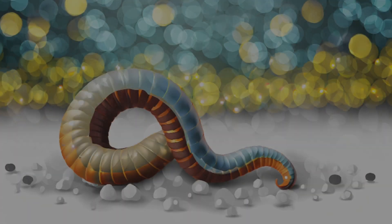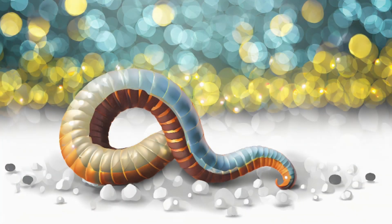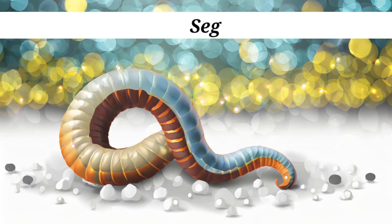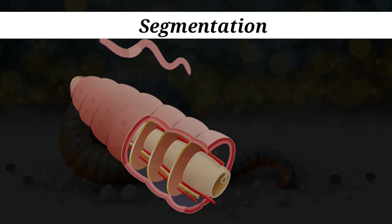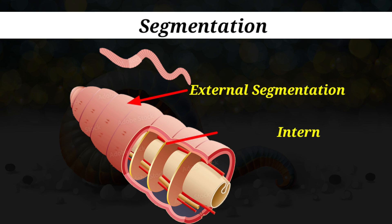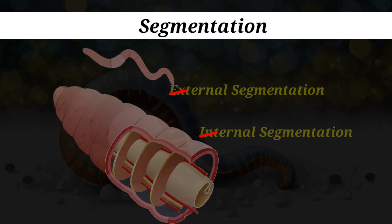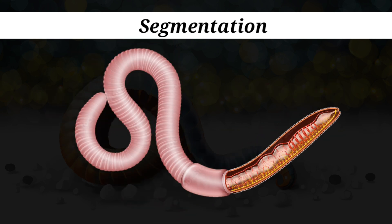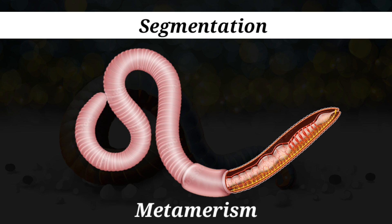Some animals are also classified on the basis of segmentation. The body of some animals can be divided externally and internally into segments. Sometimes the segments of animals have serial repetition of some organs, which is seen in earthworms. This phenomenon is known as metamerism.